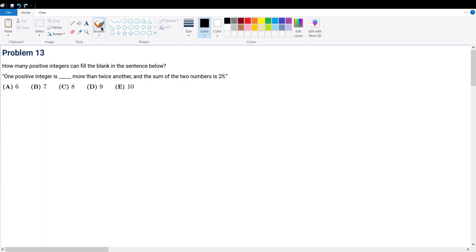Problem 13: How many positive integers can fill the blank in the sentence below? One positive integer is blank more than twice the other, and the sum of the two numbers is 28. All right, let's suppose the unknown information.